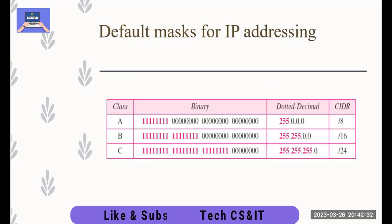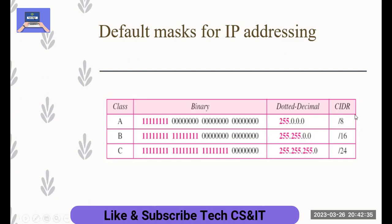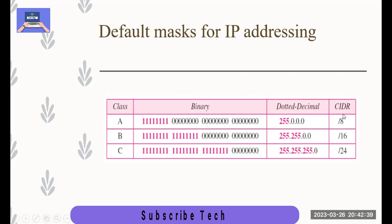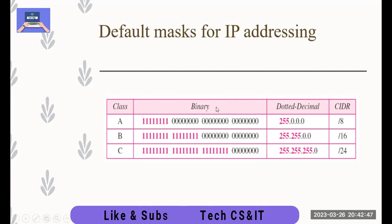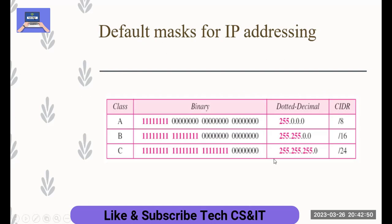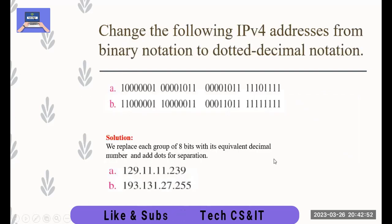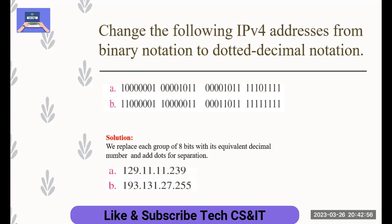We have default masks for three classes. We have CIDR notation. In our classes, we represent them with backslash 8, 16, or 24, representing the network bits. We represent them in dotted decimal notation, so we represent them with 255. We use binary representation and conversion for these resources.